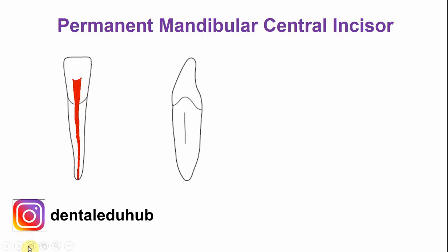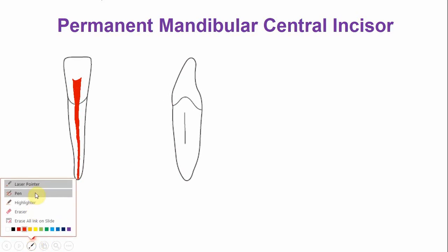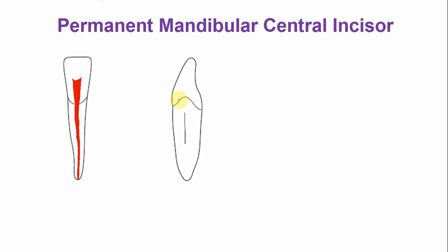This is the outline of the labio-lingual section of the permanent mandibular central incisor. The dimension of the pulp chamber is quite large labio-lingually from this aspect, as compared to the mesiodistal dimensions. The tooth has one canal, as already described, but the dimension of the canal is also more labio-lingually. The dimension of the canal is also more labio-lingually as compared to the mesiodistal dimensions.